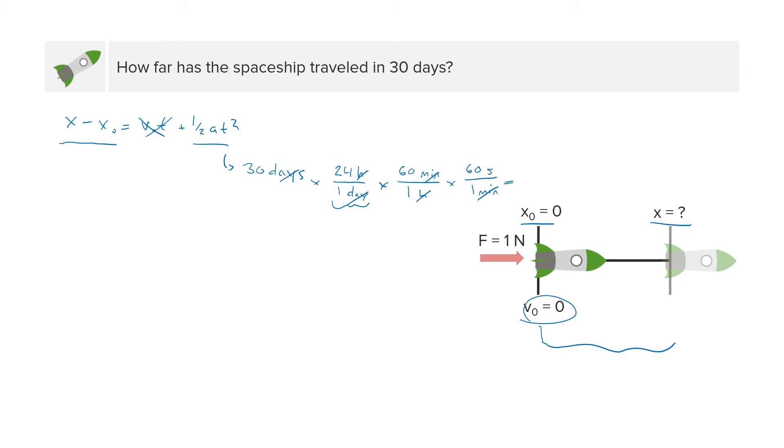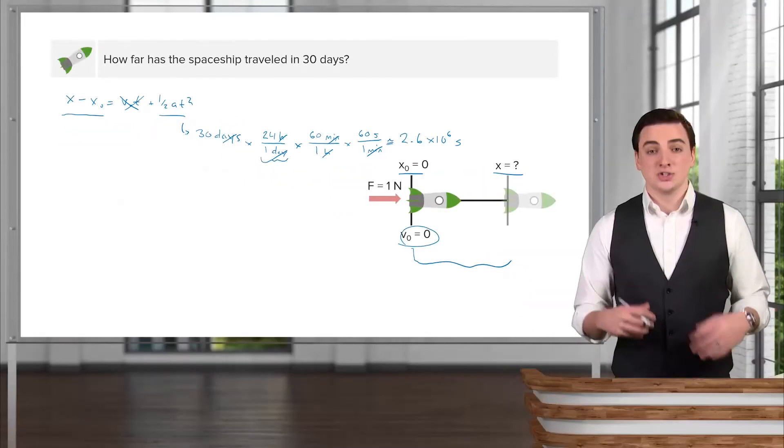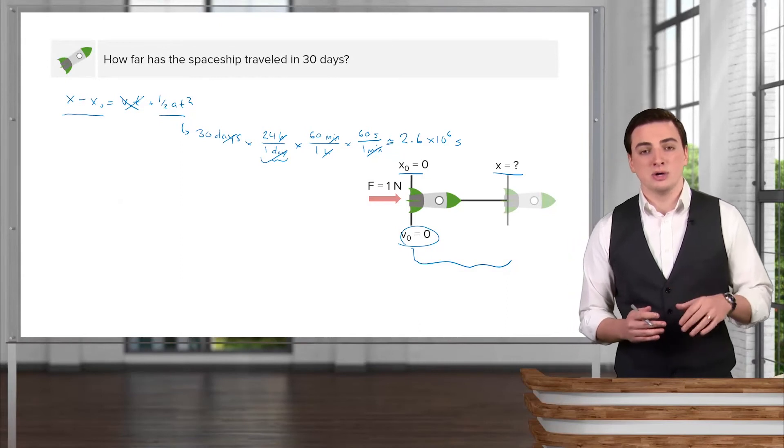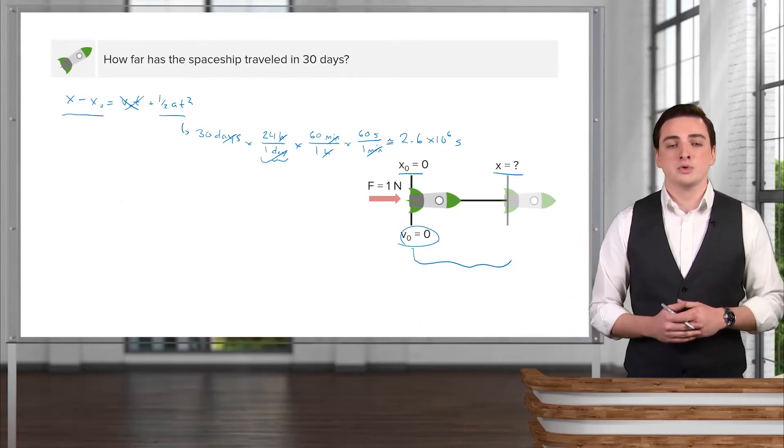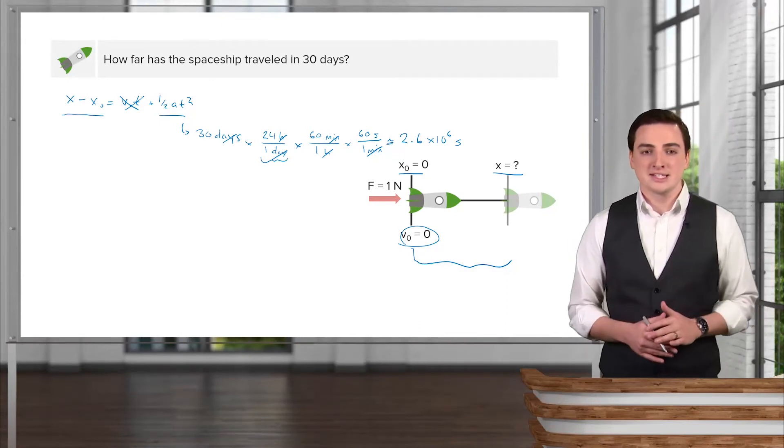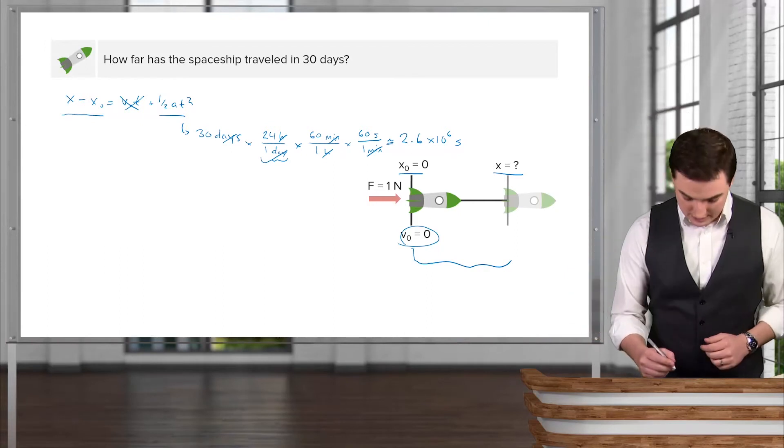I will have my time in units of seconds. So if we do this, and you can do this on your own using a calculator, we have something that is approximately 2.6 times 10 to the sixth seconds. So that's a lot of seconds. So even though we're applying a small force, we do get a long time over which this force is applied. So maybe we'll get the spaceship to move pretty well after all.